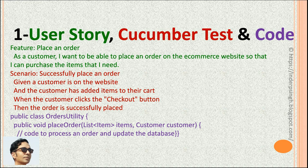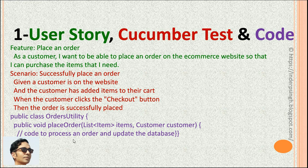In Java, this user story may be implemented using a public class like OrdersUtility, which has a public method called placeOrder. It needs an item object and a customer object. There is a list of items placed by the customer in the shopping cart and a customer object. Using a list of item objects and the customer object, the developers have to write the code to process an order and update the database.